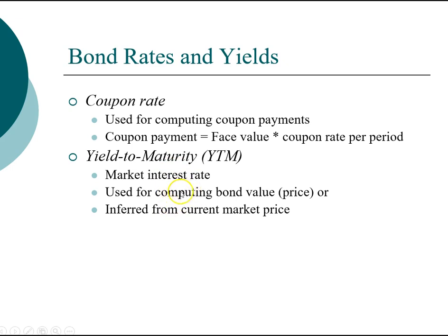The yield to maturity can be used to compute bond prices, or it can be inferred from the current market price. In practice, a company interested in issuing a bond will look at the current market price of bonds with similar quality — particularly bond rating. A triple-A company, for example, will look at prices of other triple-A bonds to determine the yield to maturity, then use that to price their own bond. Investors can do the same thing to estimate the value of a bond they are analyzing.